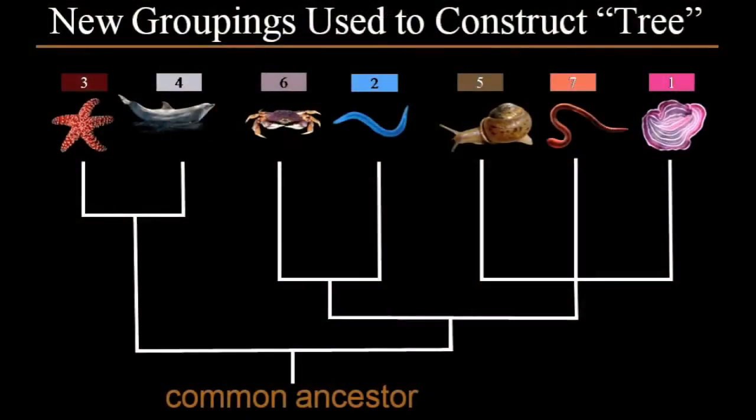Well Darwin himself knew that the fossil record did not fit that picture. He knew, for example, about the relatively sudden appearance of the major forms of animals in the Cambrian, the geological period known as the Cambrian.